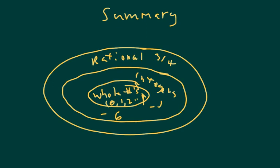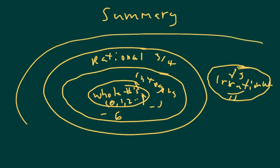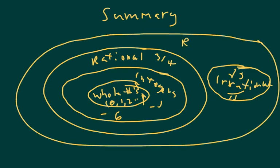So whole numbers, by the way, can be expressed as rational numbers. I could take the number two and make it two over one. So whole numbers are rational numbers. So everything in the smaller circles also fit in the larger circles. But then there's these irrational numbers that they don't really fit inside the other three circles. Like the square root of five or pi.